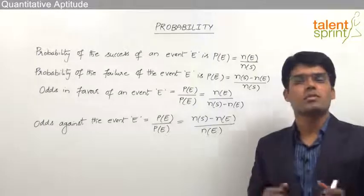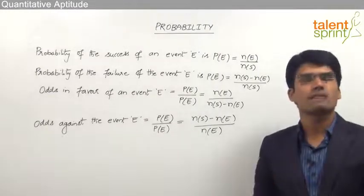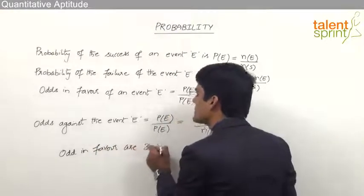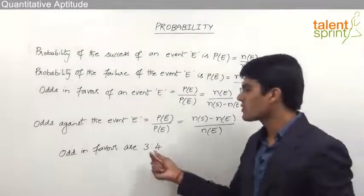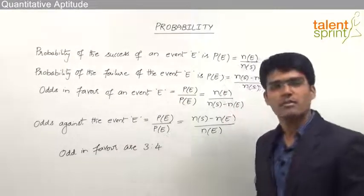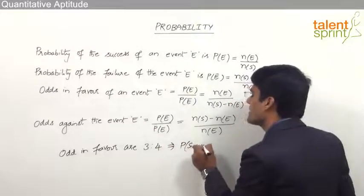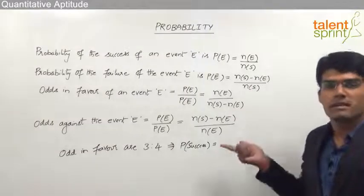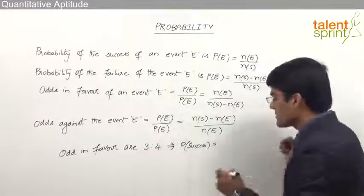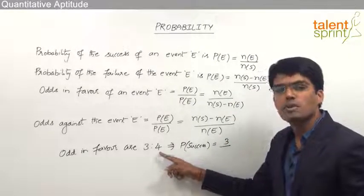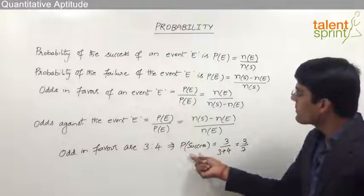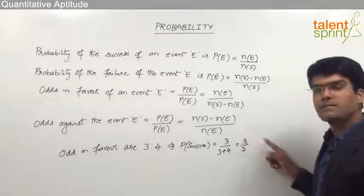Let's take an example. Suppose the odds in favor of a particular event are 3:4. That means there are 3 outcomes in favor of the event and 4 outcomes not in favor. So the probability of success is 3 divided by the total number of outcomes, which is 3 plus 4 equals 7, giving us 3/7. Once we know the probability of success is 3/7, the probability of failure is 1 minus 3/7, which equals 4/7.